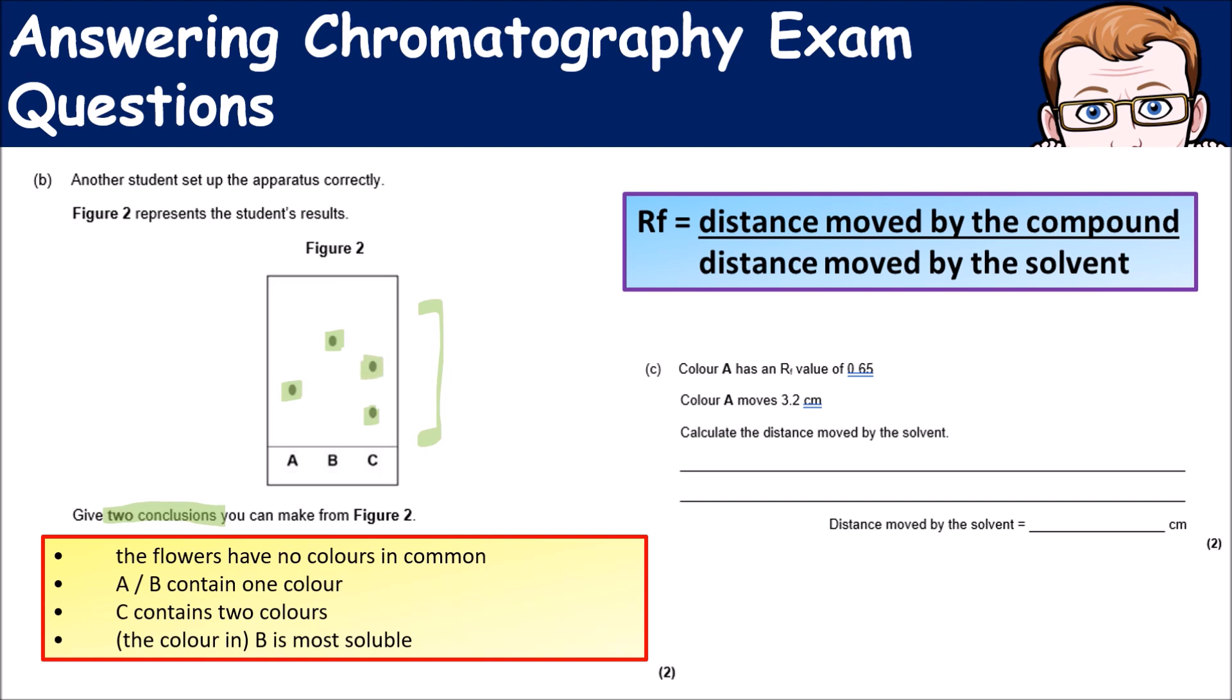The final part of the question asks you to do something with this equation for the Rf value. It's asking you to calculate the distance moved by the solvent because it's giving you the Rf value and the distance the color moves.